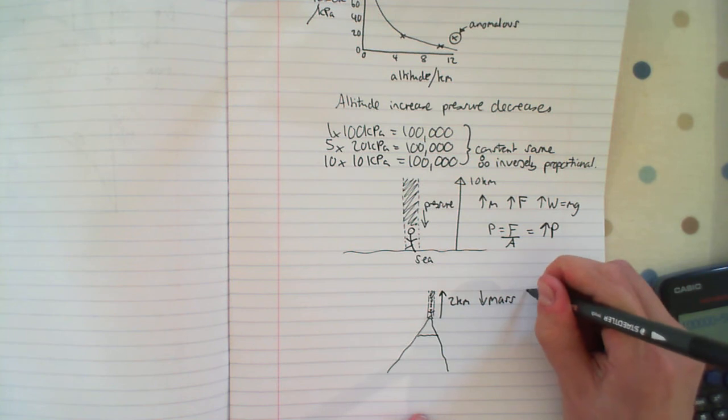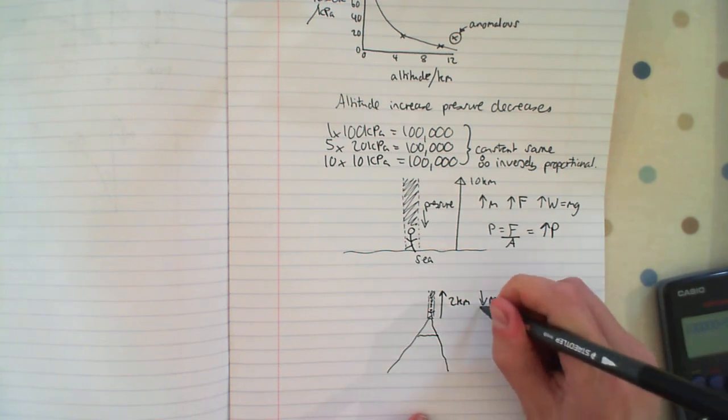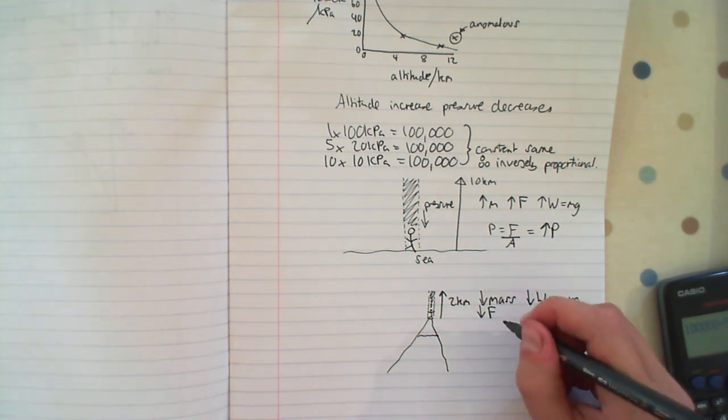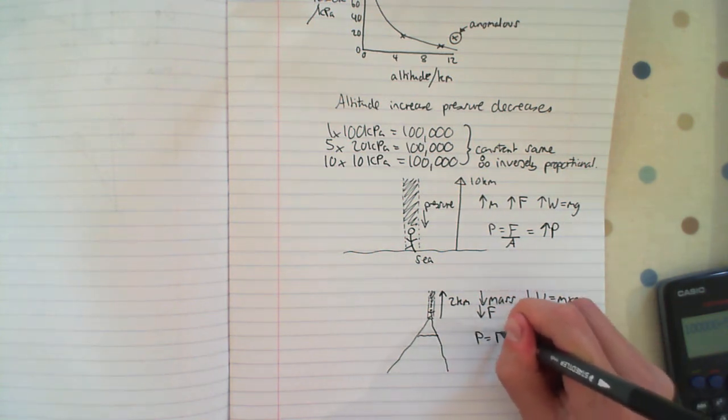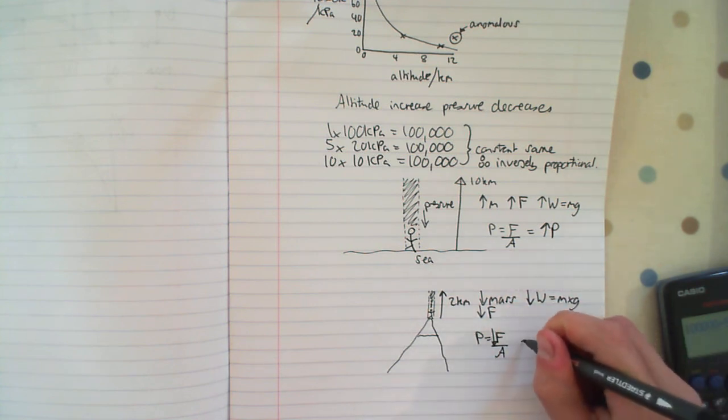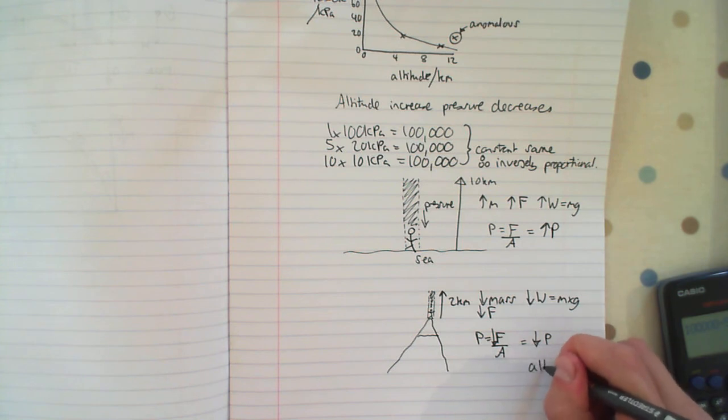Therefore we've got less weight, because remember weight is mass times gravity. If we've got less weight, we've got a lesser force onto that person or that object. So we've got lesser force, so we've got pressure equals force divided by area. Because that force is decreased, we get a decreased pressure as altitude increases.